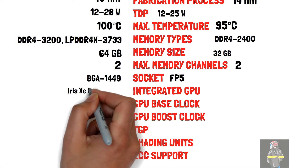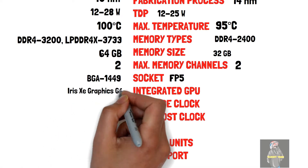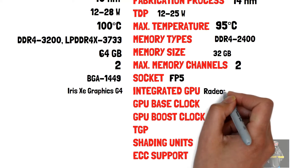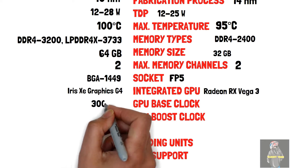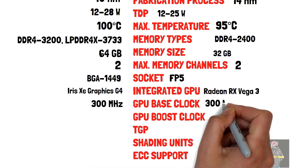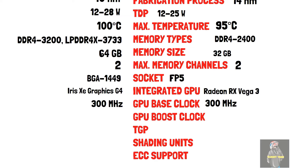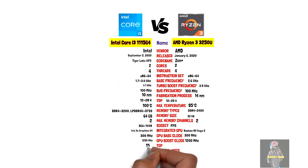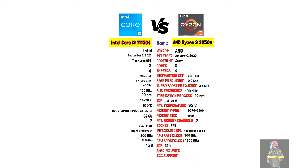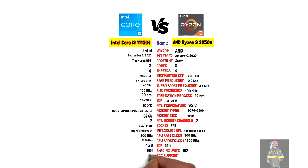Integrated GPU: Intel Iris Xe Graphics G4 versus Radeon RX Vega 3. GPU base clock: 300 MHz versus 300 MHz. GPU boost clock: 1250 MHz versus 1200 MHz. GPU TDP: 15 Watt versus 15 Watt. Shader processors: 384 versus 192. Ray tracing: No for both.